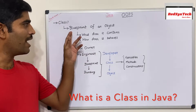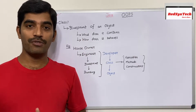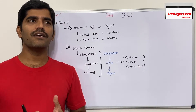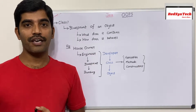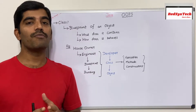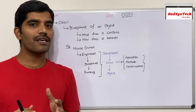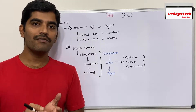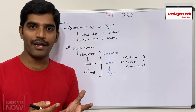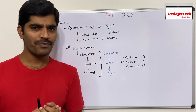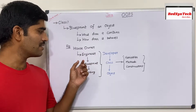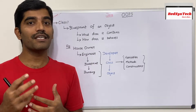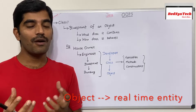Let's see what a class is. A class is nothing but a blueprint of an object. What do we mean by blueprint? A blueprint is like a template. Let's say you have a piece of land where you want to construct a house. You ask an engineer to construct a house, and he creates a piece of paper — a diagram — which tells us how the house looks. That gives us an imaginary vision of the house. That is what a class is.